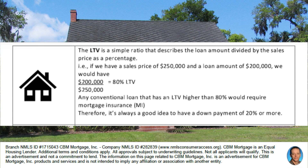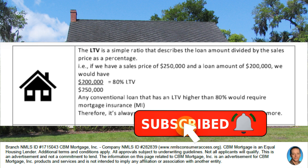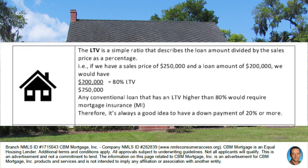Any conventional loan with a loan-to-value higher than 80% would require mortgage insurance. Therefore, we recommend having 20% down. If you're buying a house and already own one that you're selling, the 20% is not that difficult to come by. But if you're a first-time buyer, that 20% might be difficult, and we can talk about what you might be able to do to offset that or what the impact of mortgage insurance might be.